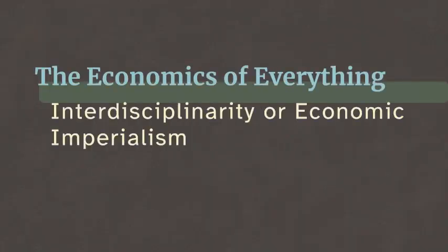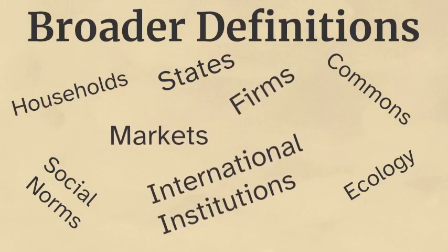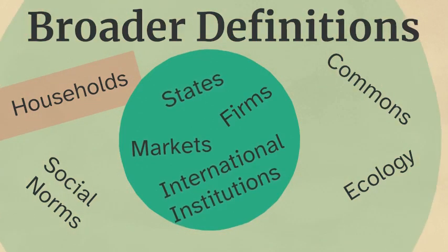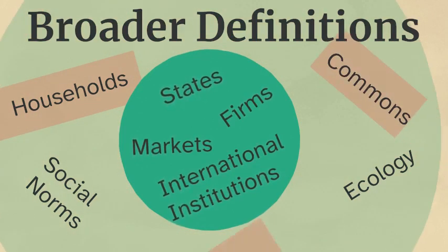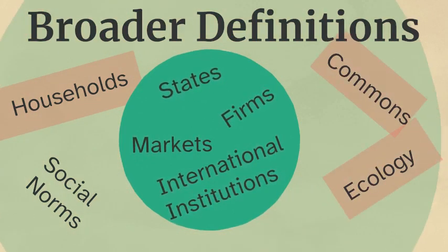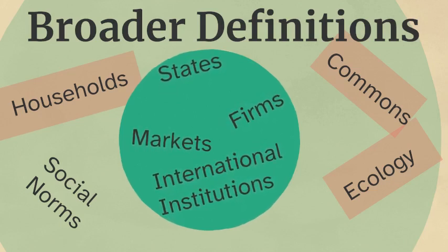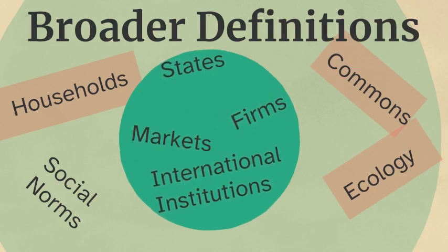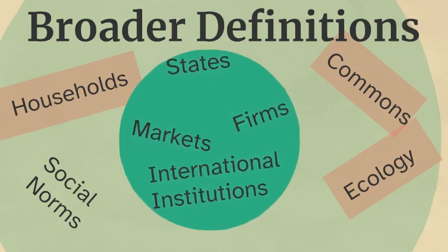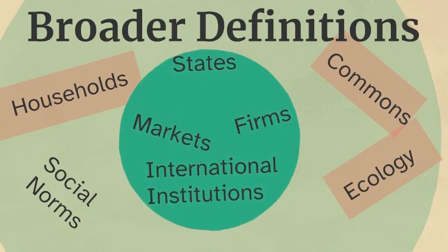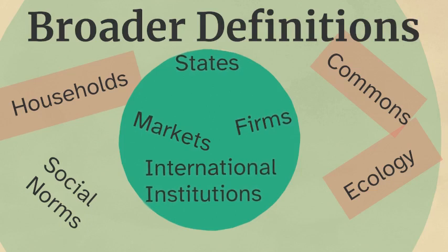The Economics of Everything: Interdisciplinarity or Economic Imperialism? Broader definitions of the economy can include households and community production and distribution through commons, as well as ecosystem services. These are undervalued or even entirely overlooked by most economic analysis. However, work within the household, such as care work, is vital to producing a productive workforce, and all economic activity is reliant on environmental factors.